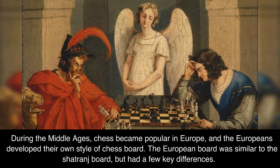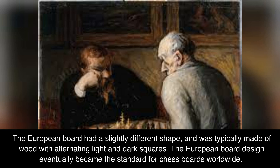During the Middle Ages, chess became popular in Europe, and the Europeans developed their own style of chessboard. The European board was similar to the Chetranj board, but had a few key differences. The European board had a slightly different shape and was typically made of wood with alternating light and dark squares. The European board design eventually became the standard for chessboards worldwide.